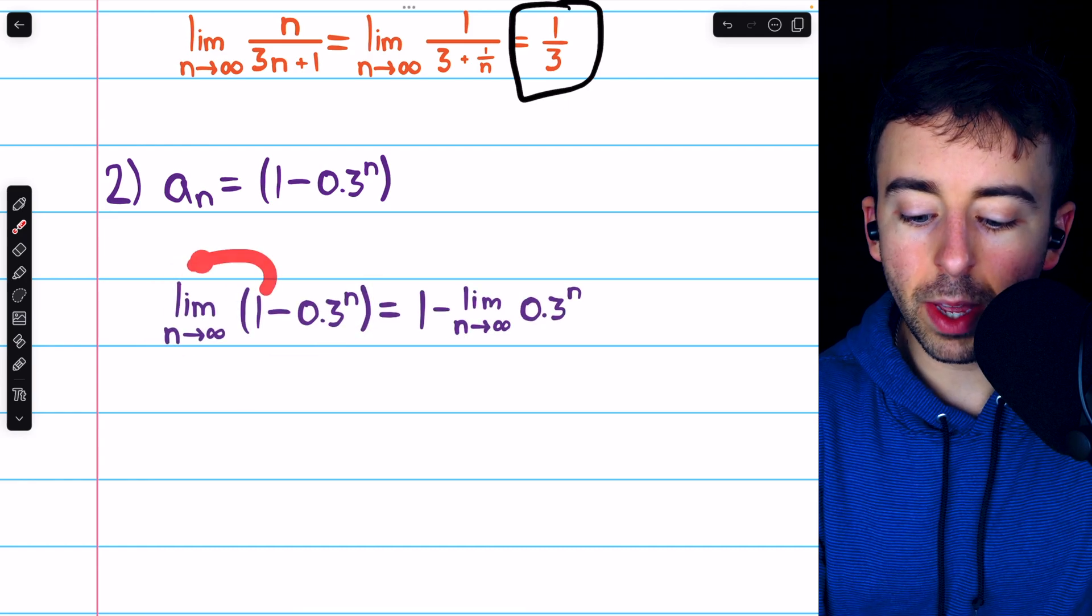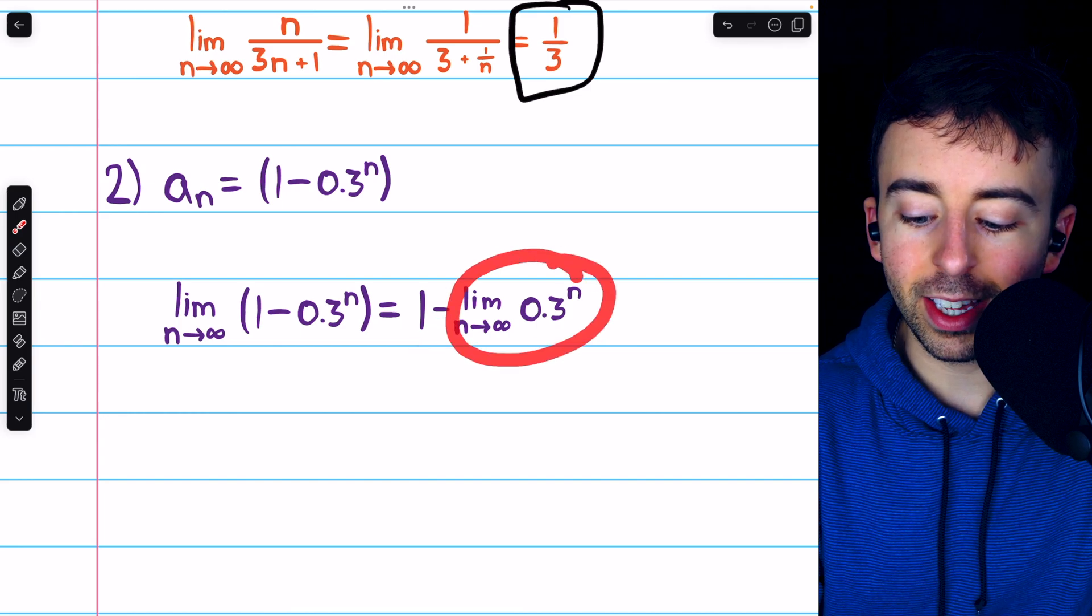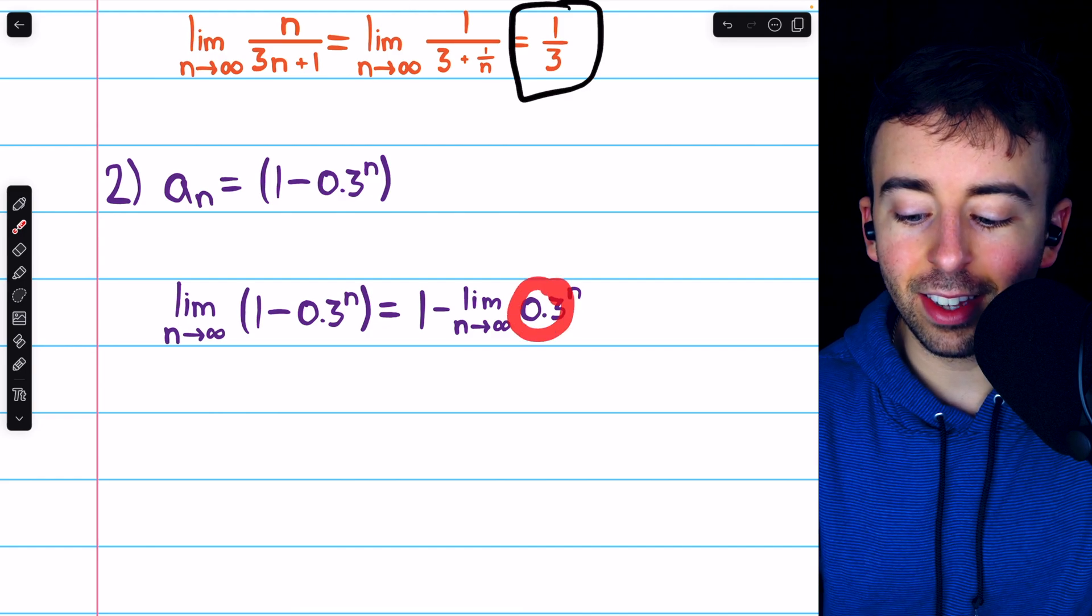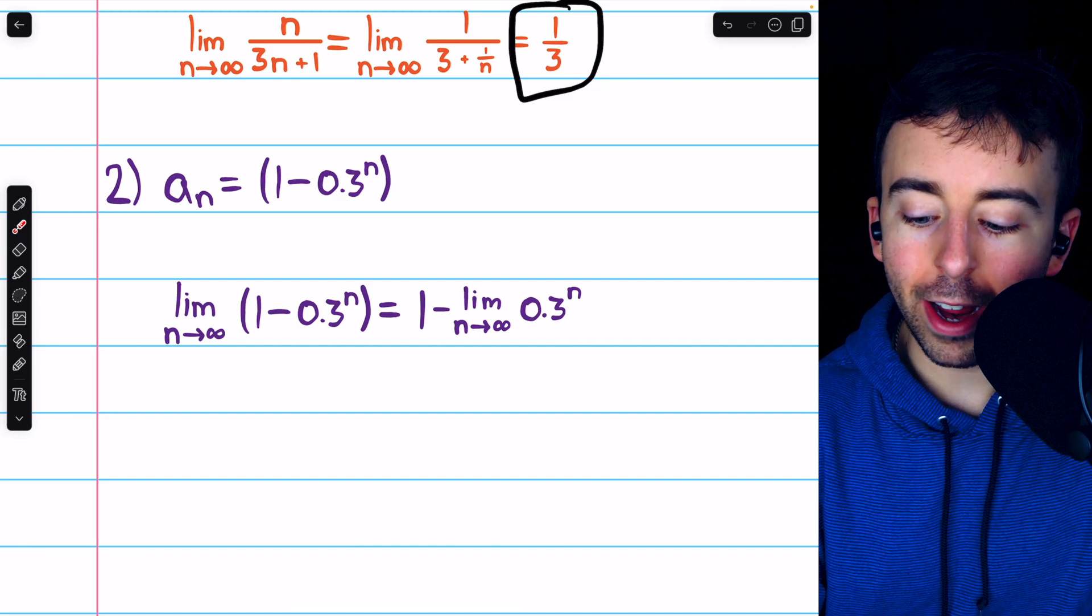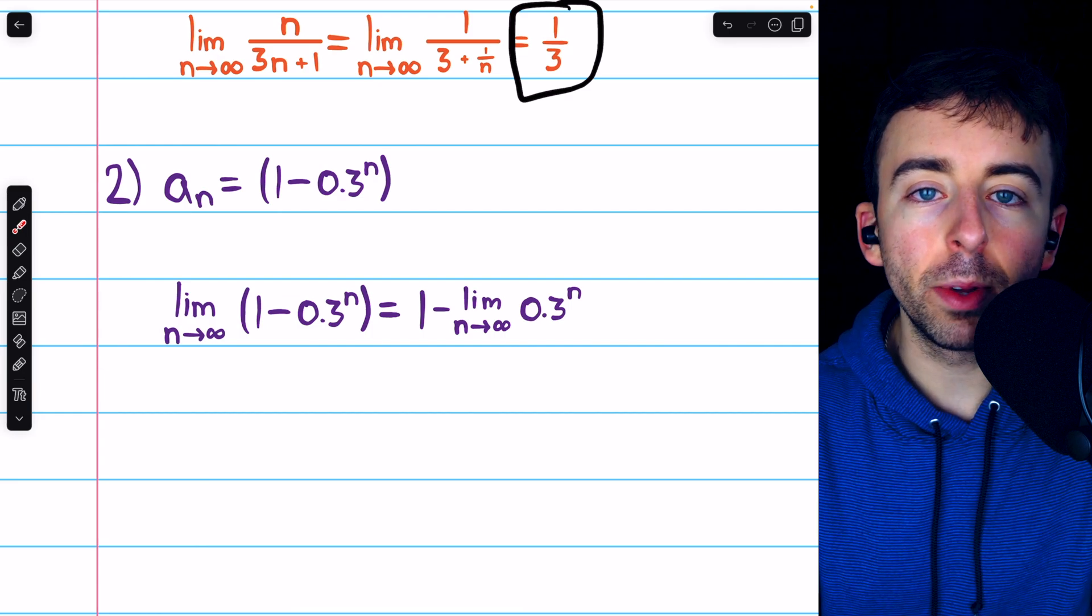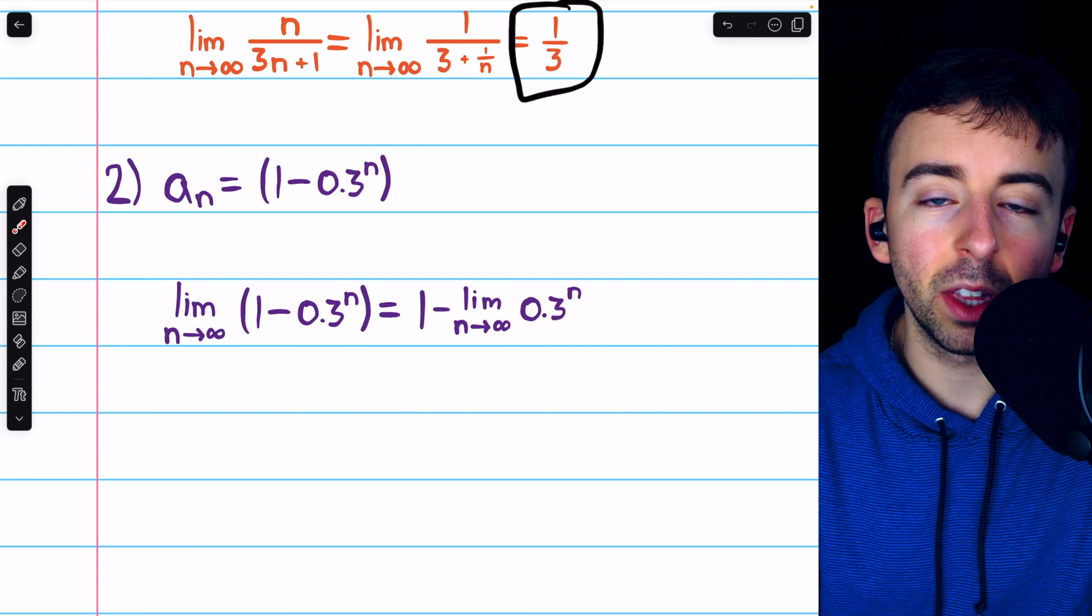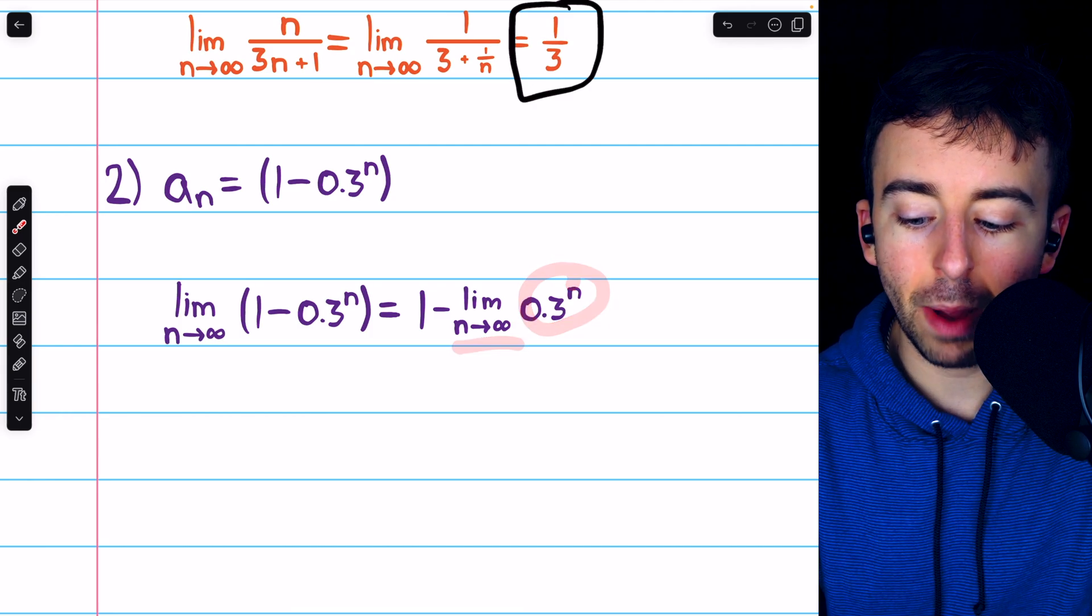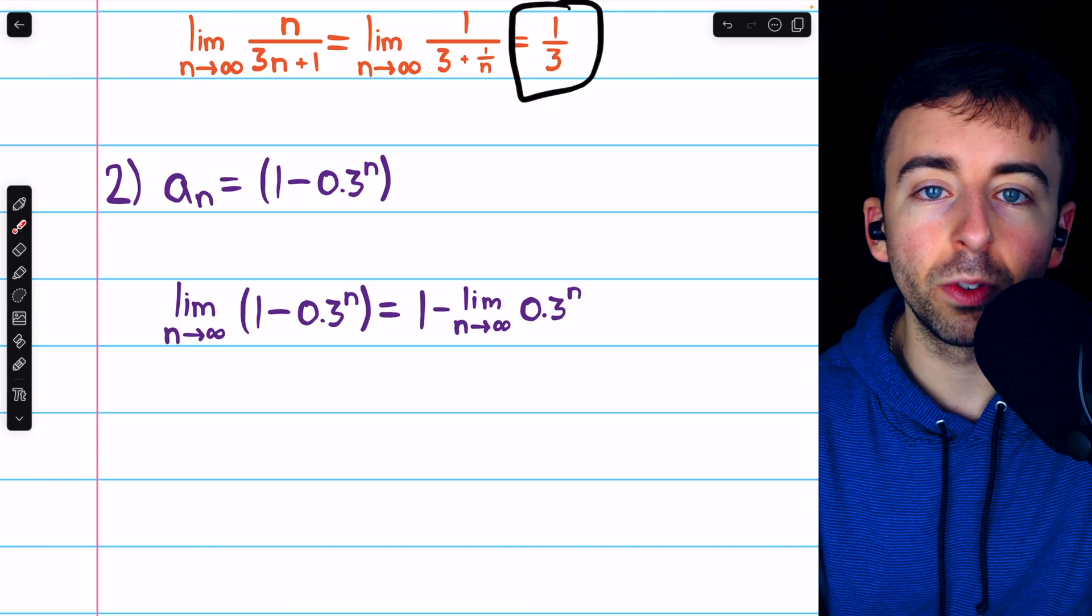The limit of the terms of this sequence will be 1 minus the limit of 0.3 to the n, as n goes to infinity. Now you have to know, because this is a number whose magnitude is less than 1, when we raise it to the power of n, as n goes to infinity, it's going to get arbitrarily small. This is 3 tenths. 3 tenths of something will only make it smaller. So when we raise this to an arbitrarily large power, it will get arbitrarily small, hence it will approach 0.